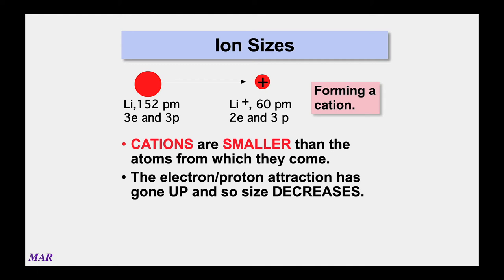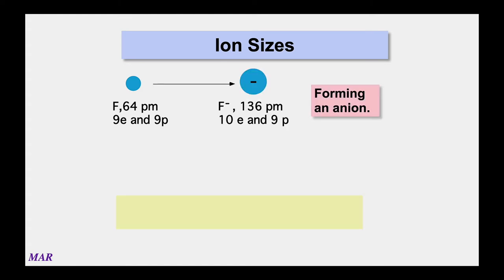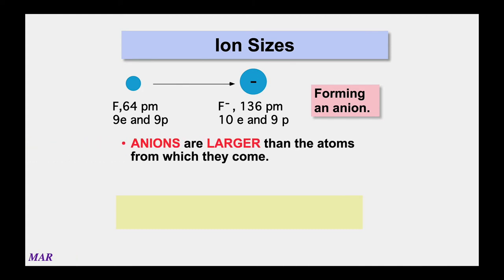Many atoms like to become anions — negative ions. If you add an extra electron to the same atom, you have the same number of 'parent' protons but more 'kid' electrons. With more kids it's harder for the parents to keep track — anions are bigger than the neutral atoms they came from. For example, fluorine going to fluoride (F⁻) goes from 64 picometers to 136 picometers. The electrons have more freedom to roam.